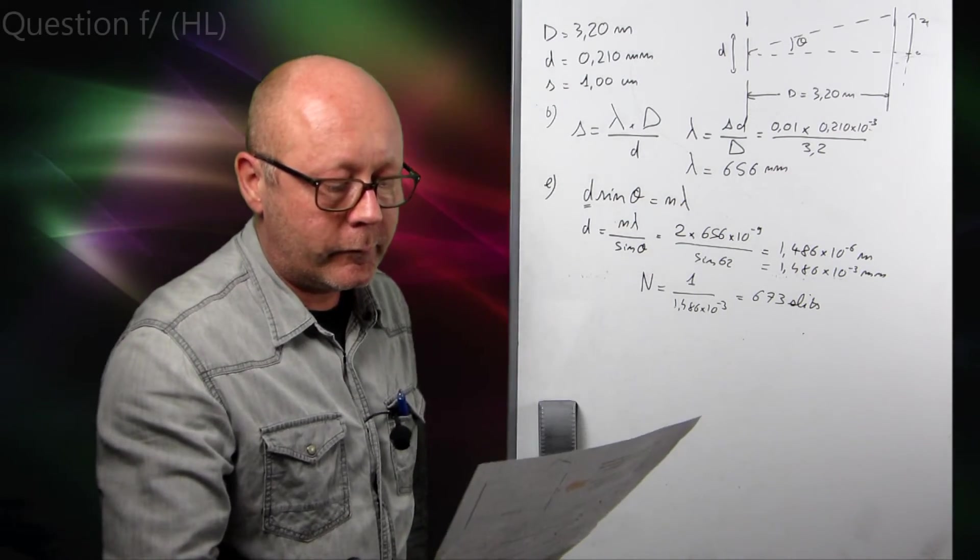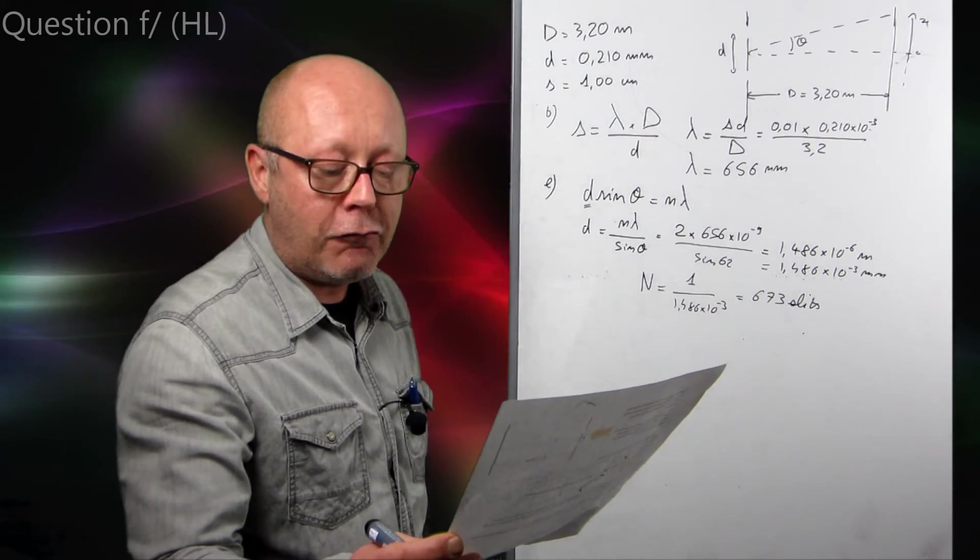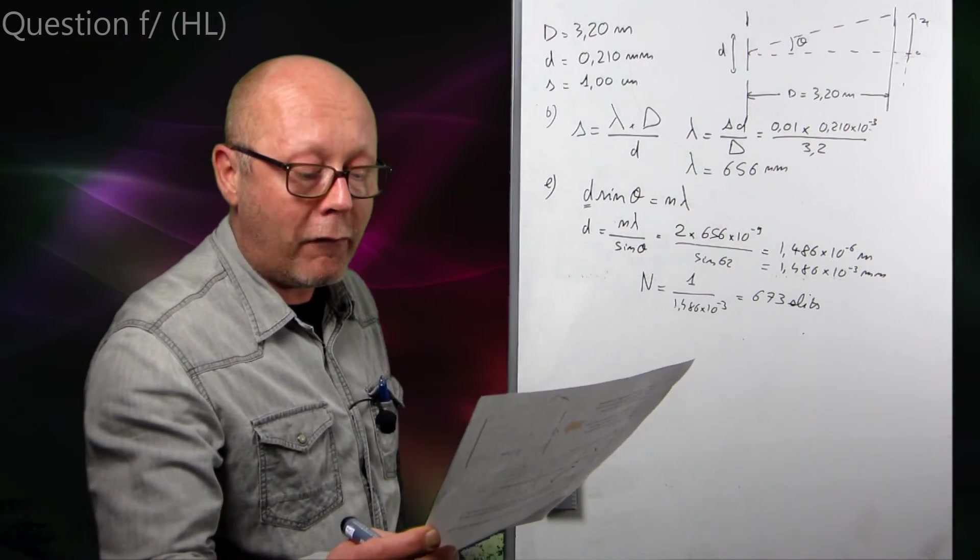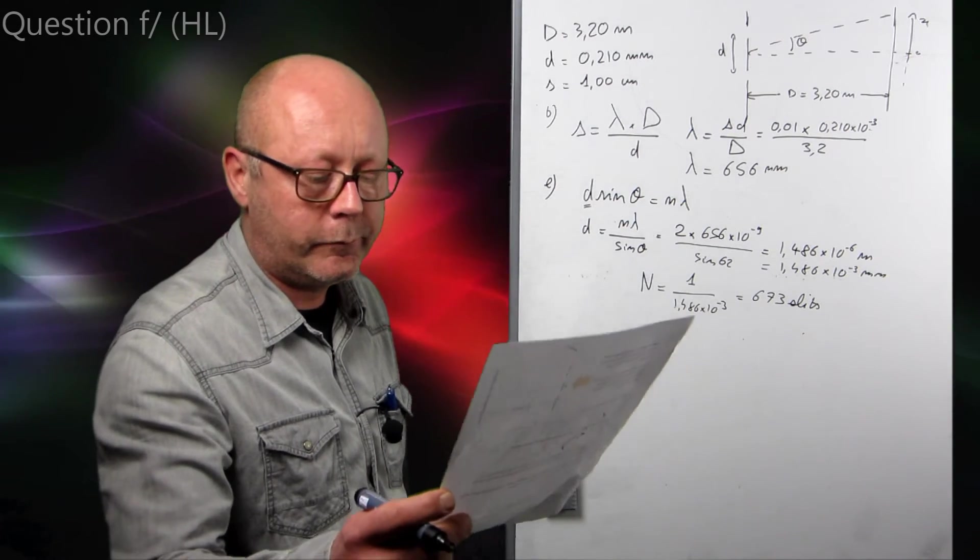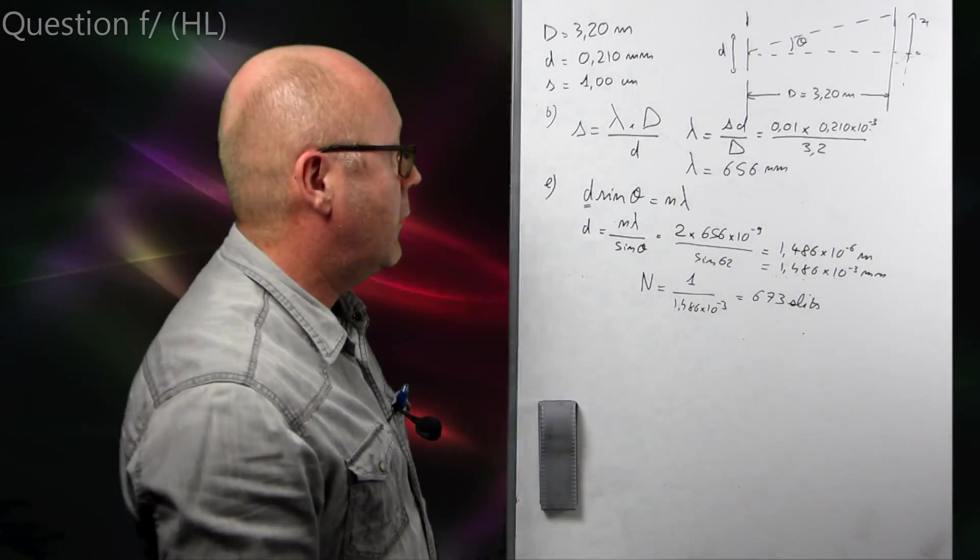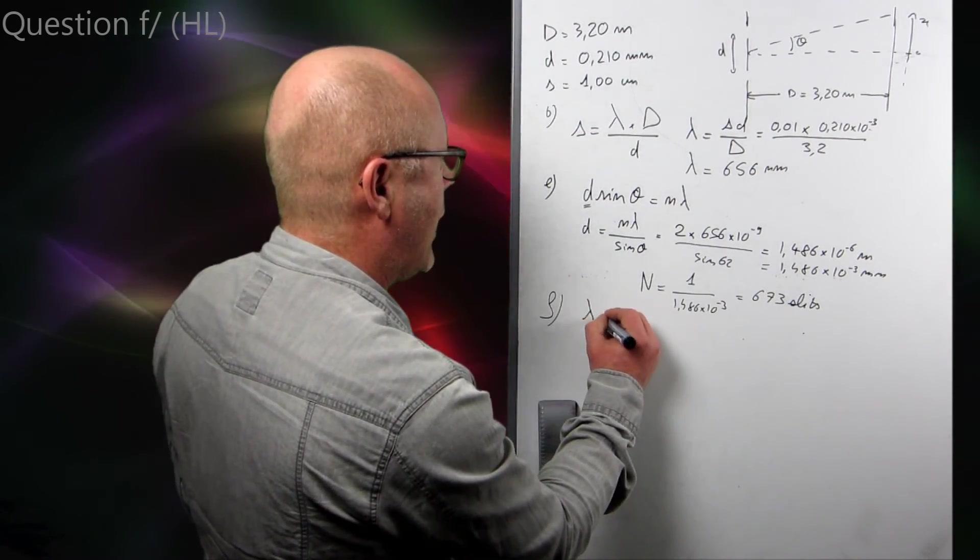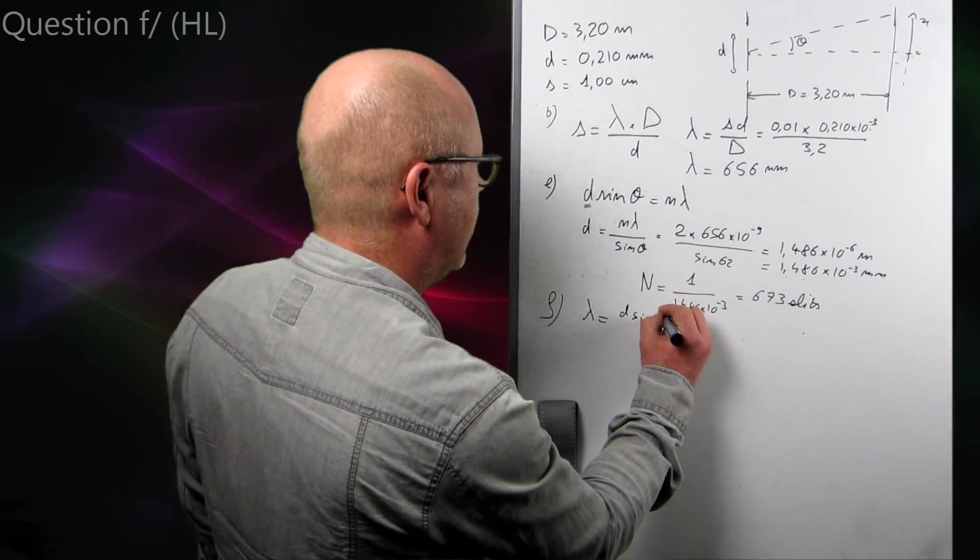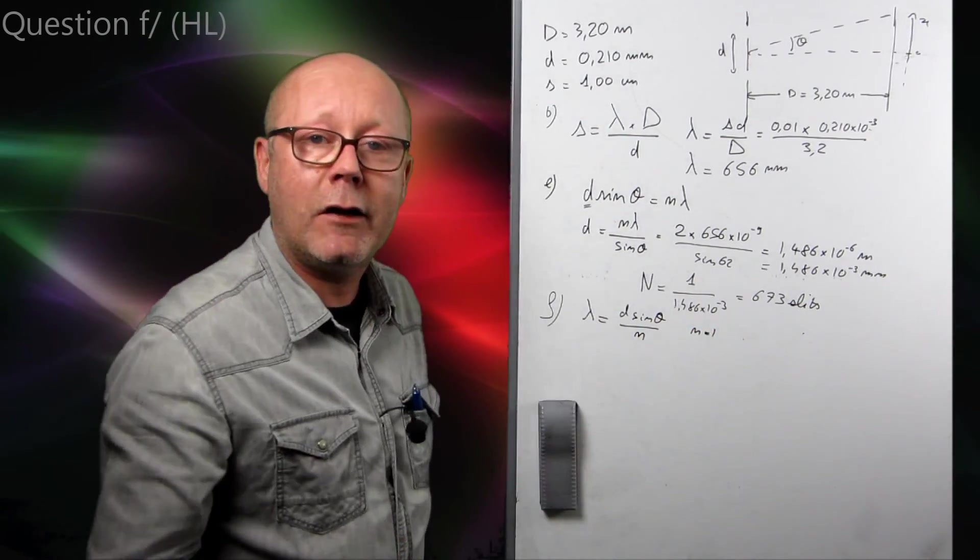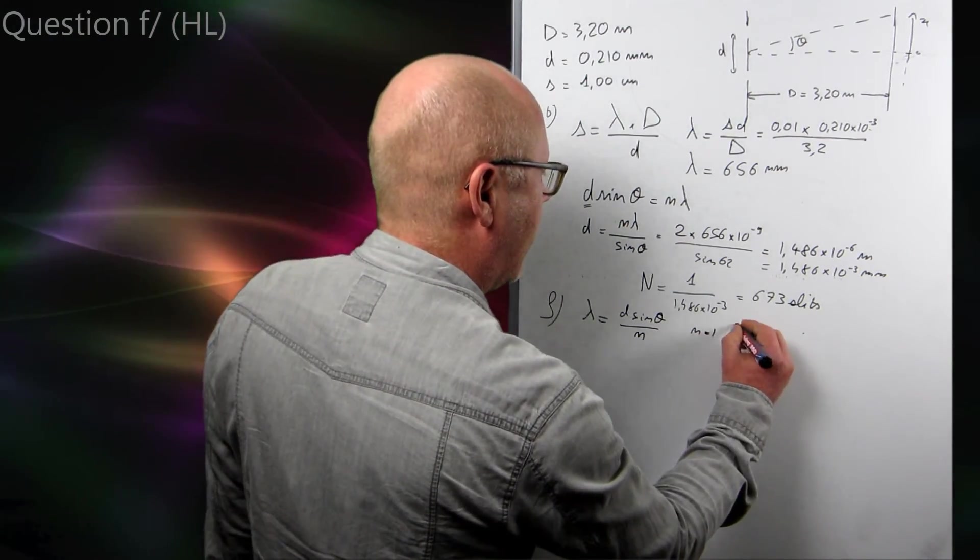Question F. Another beam of visible light illuminates the grating. It creates a maximum at the same angle as in E, so at 62 degrees. The order of that maximum is different, so it's not N equals 2. Determine the wavelengths of this beam and the order of this maximum. Well, so I'm just going to use the formula for the diffraction grating, and rearrange it to get the wavelengths. So, D sin theta on N. For N equals 1, I'm going to try all the different values of N and see what I get. Right?